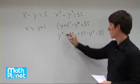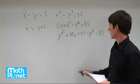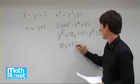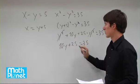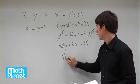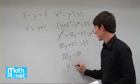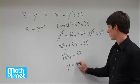These y squared cancel each other out. Great. So then we have 10y plus 25 equals 35. Subtracting 25 from both sides gives us 10y equals 10. So y is equal to, when we divide both sides by 10, 1.